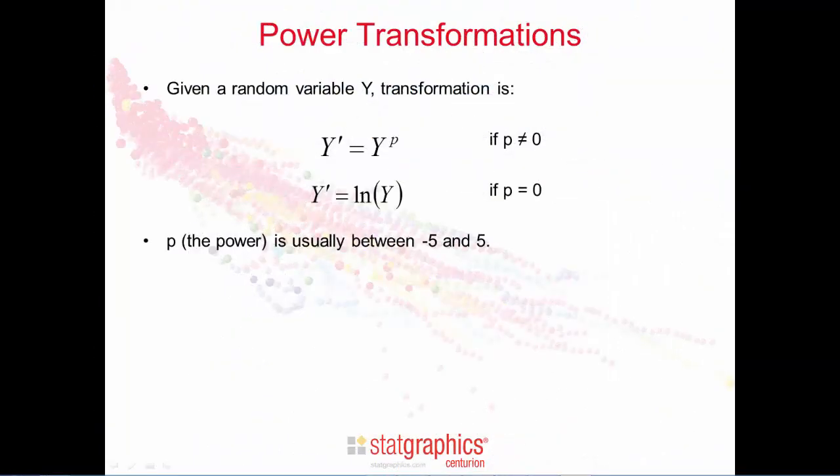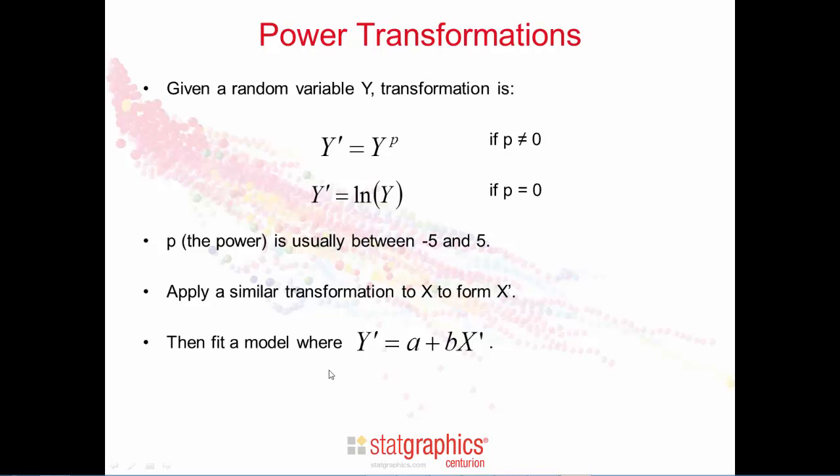A common way to fit a curvilinear statistical model is to modify either y or x or both by raising them to some power. For example, given a random variable y, I could define y prime as being y raised to the p power, if p is not equal to 0, or y prime equals the natural logarithm of y, which would correspond to a case where the power was equal to 0. This is a very useful class of transformations and often gives good statistical models for values of p between minus 5 and 5. We'll also apply a similar transformation to x in order to find x prime. Then fit a model where y prime is a linear function of x prime.